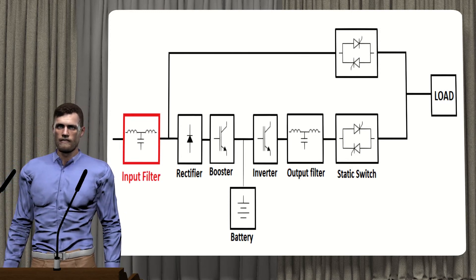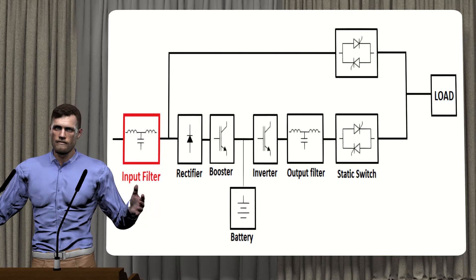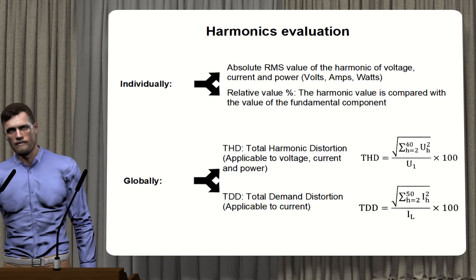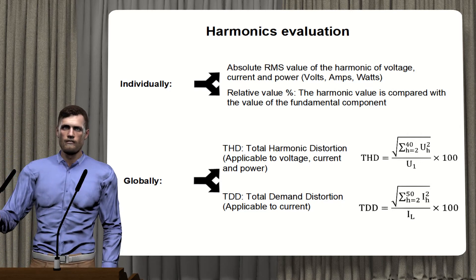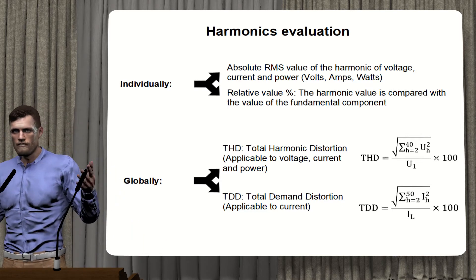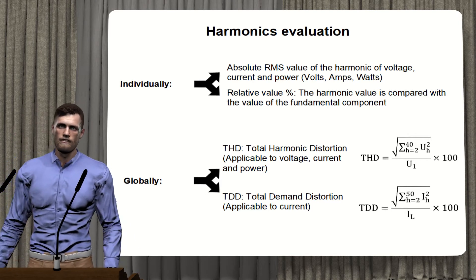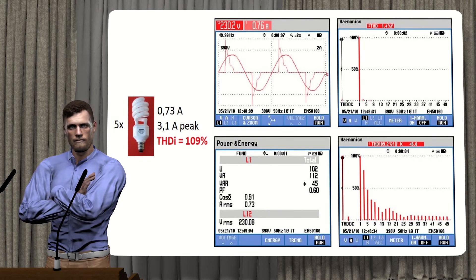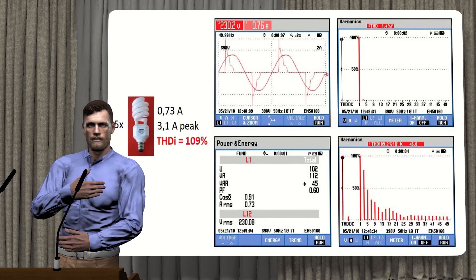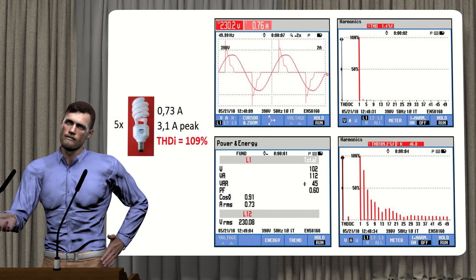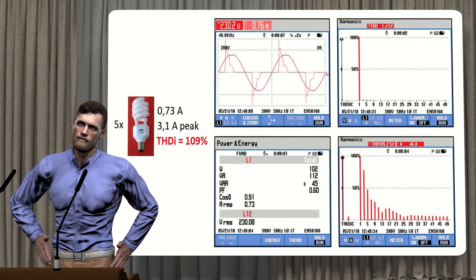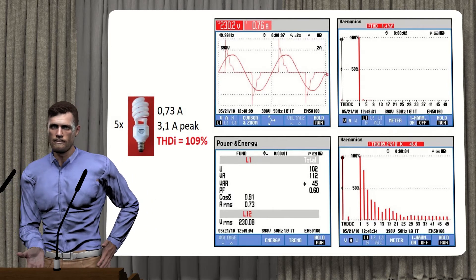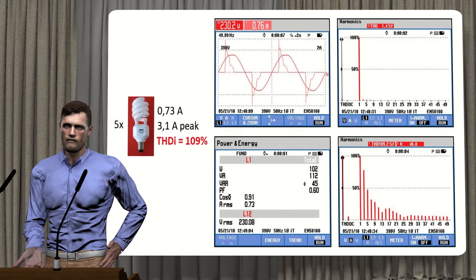Although THD is a good tool to control voltage distortion, current THD does not always give us a clear vision of the impact that harmonics have on the installation. For example, let's consider a current low consumption light bulb that we can find in a supermarket. As we can see in the image, the current THD can be higher than 100%. A 100% current distortion is actually a very high value. However, in this case the impact that the current harmonics generated by the bulb may have on the installation will be minimal, since the current consumed by a single bulb is small compared to the capacity of the installation cables.